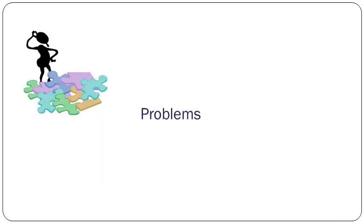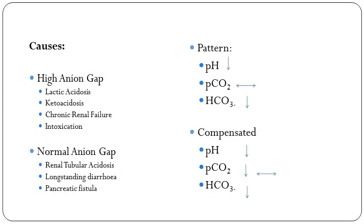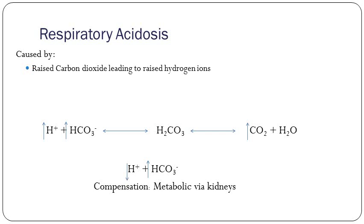What can go wrong with the system? Respiratory acidosis is interesting. In respiratory acidosis, your CO2 is raised, and your raised CO2 pushes the whole equilibrium — Le Chatelier's principle — all the way across, and you get raised hydrogen ions and raised bicarb. But your raised bicarb is at a lower level than the raised hydrogen ions, so you become acidotic. So it's raised CO2 leading to raised hydrogen ions — that's respiratory acidosis. And compensation is metabolic by the kidneys: the kidneys get rid of the hydrogen ions, and you get raised bicarb.